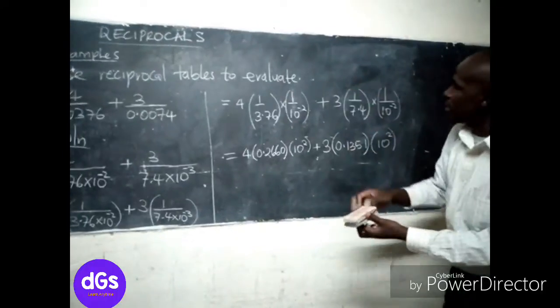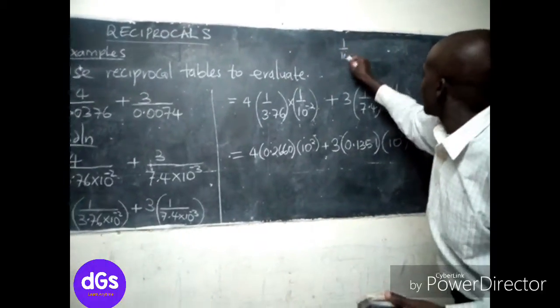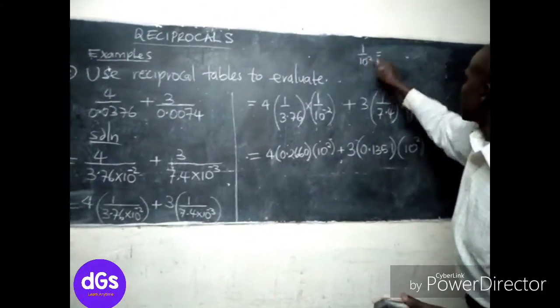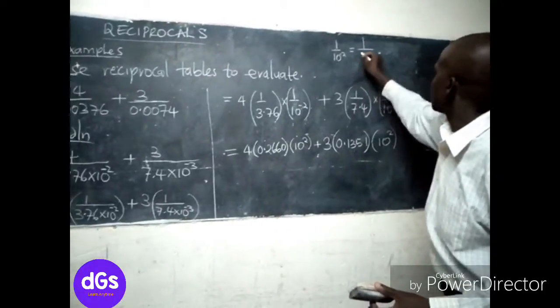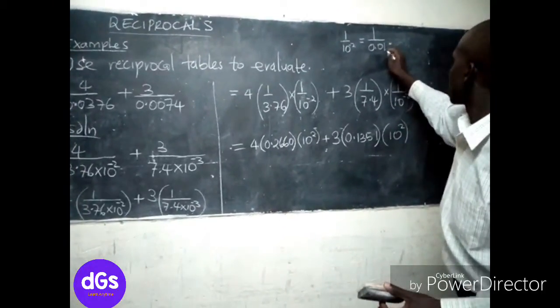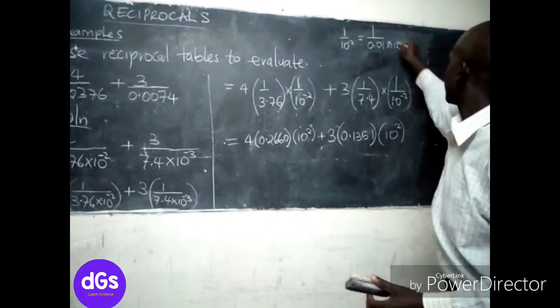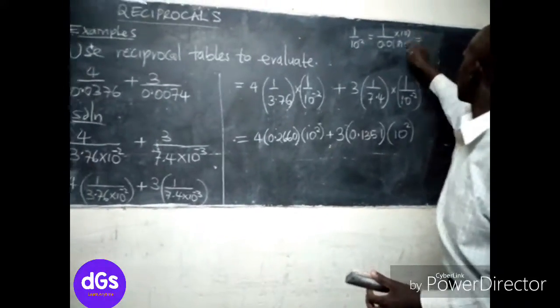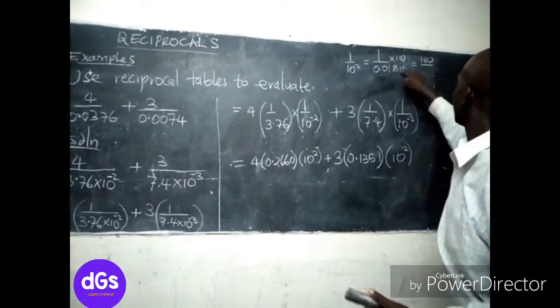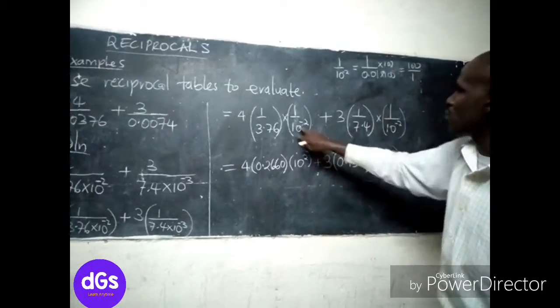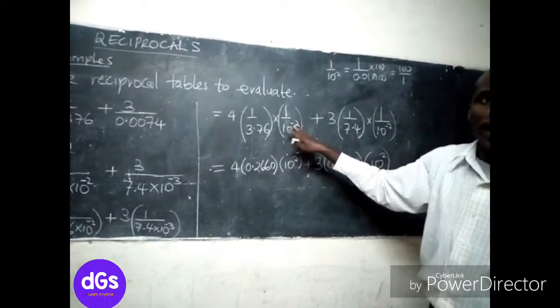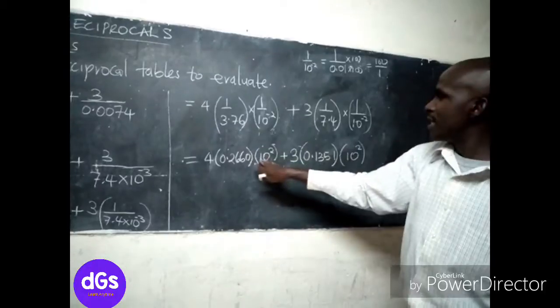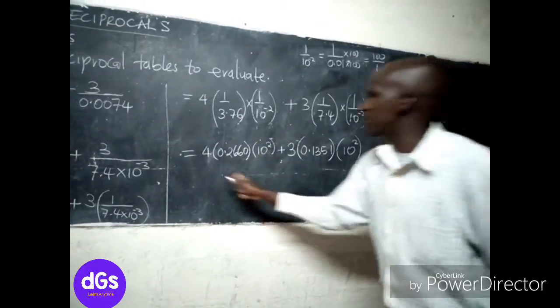If you have 1 over 10 power negative 2, it means this is simply 0.01, then times 100, so this one becomes 100 over 1. That is why after 1 over 10 power negative 2, we are getting 10 squared.